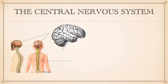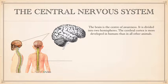We're going to start with the central nervous system, which is made up of the brain and the spinal cord. The brain is the centre of all conscious awareness in humans. It's divided into two hemispheres and the outer layer of the brain is known as the cerebral cortex — you can think of the cerebral cortex a little bit like a tea cosy that sits on top of the brain. The cerebral cortex is highly developed in humans and it is what distinguishes us and our higher mental functions from other animals.